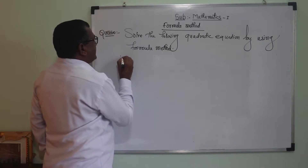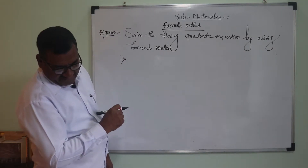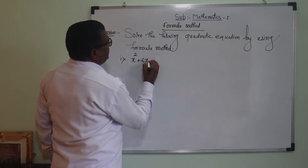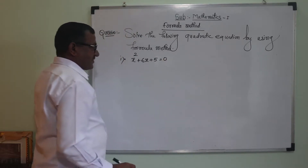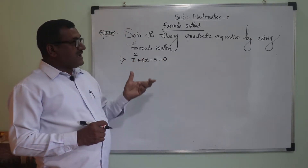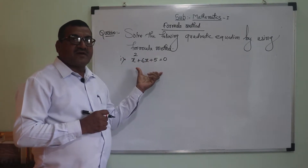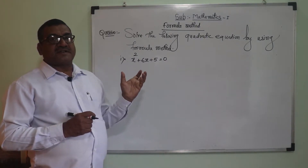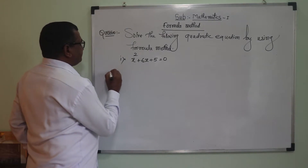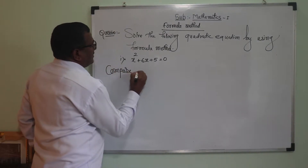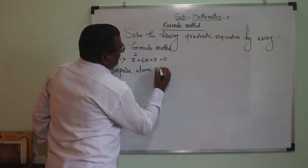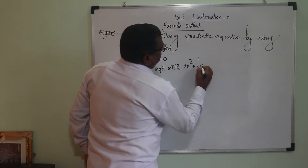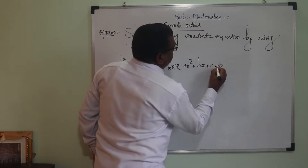The first example of this method is x squared plus 6x plus 5 is equal to 0. We are using the formula method here. Let's compare this quadratic equation with the standard form.